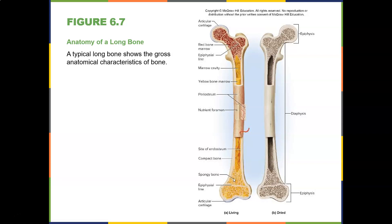Here's a good true/false question: spongy bone is deeper to compact bone, or compact bone is superficial to spongy bone. The epiphyseal line is where you grow from — the difference between the diaphysis and the epiphyses is what causes you to grow. When this shuts, growth no longer takes place.